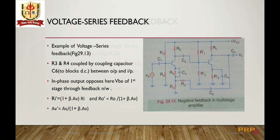Due to this, the input impedance is increased and the output impedance is decreased by a factor of (1 + β·Av). The overall gain with feedback, or closed-loop gain, is reduced: Av' = Av / (1 + β·Av). These formulas are used for calculating the input/output impedance and the overall gain of the voltage series feedback amplifier.